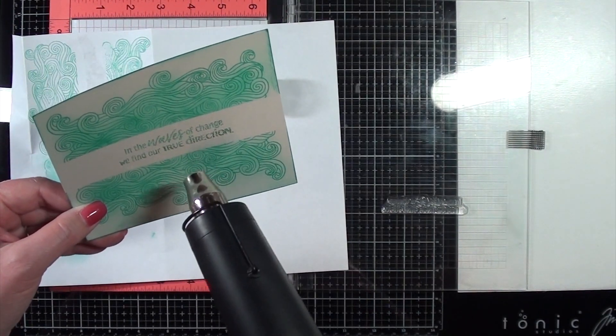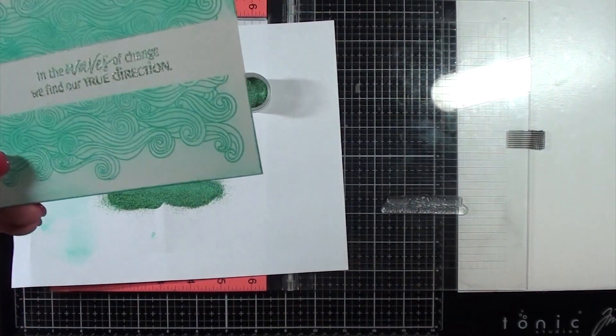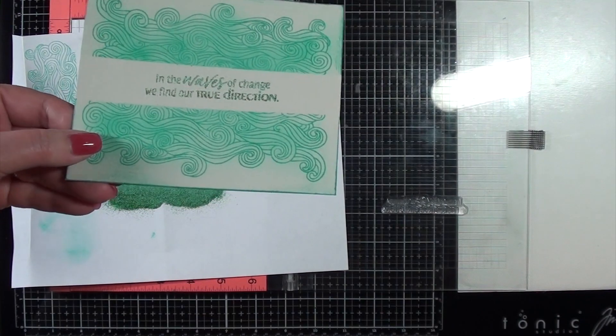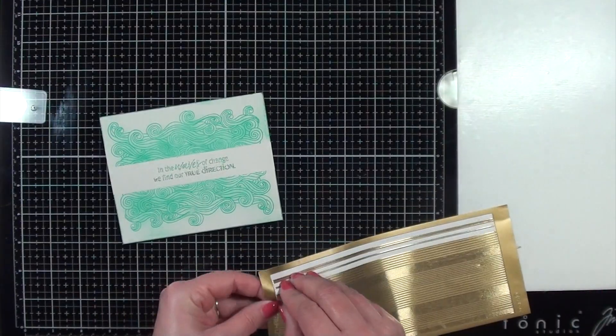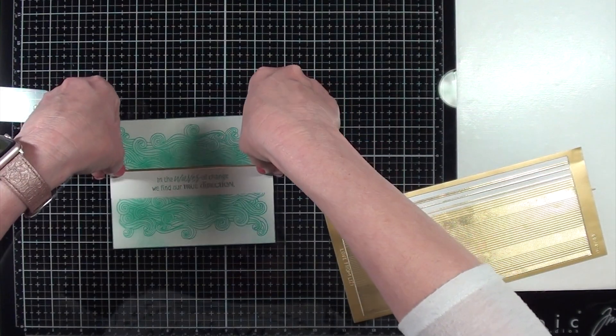And when you heat emboss it, what you see in the end is that the finished heat embossing looks like a mixture of gold in different teal and aqua colors, which I thought was very pretty.